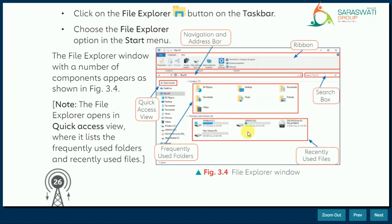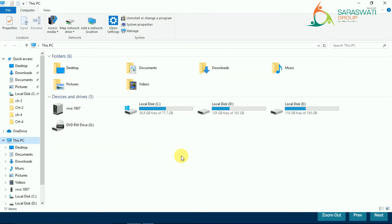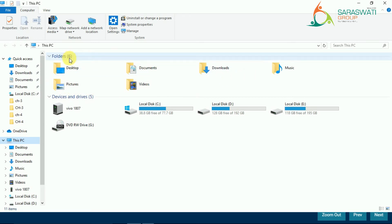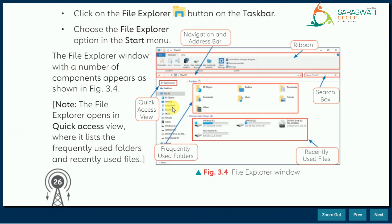Now moving to the main area — the folders section. The title says 'Folders' with a number showing how many folders there are. These are frequently used folders — the folders we use many times. In your textbook it shows 6, and right now I also have 6 folders. So total 6 frequently used folders are available.